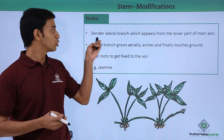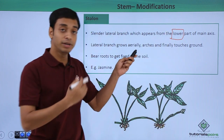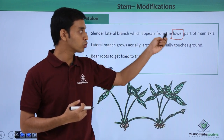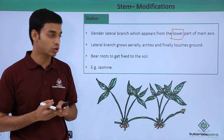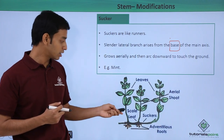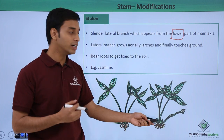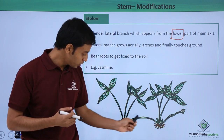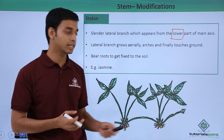The next type is known as a stolon. These are slender lateral branches arising from the lower part of the main axis — not absolutely at the base like suckers, but from the lower regions. The lateral branches grow aerially to some extent, then arch and touch the ground. Wherever they touch the ground, they form roots, fixing into the soil and forming a new plant. A good example is jasmine.